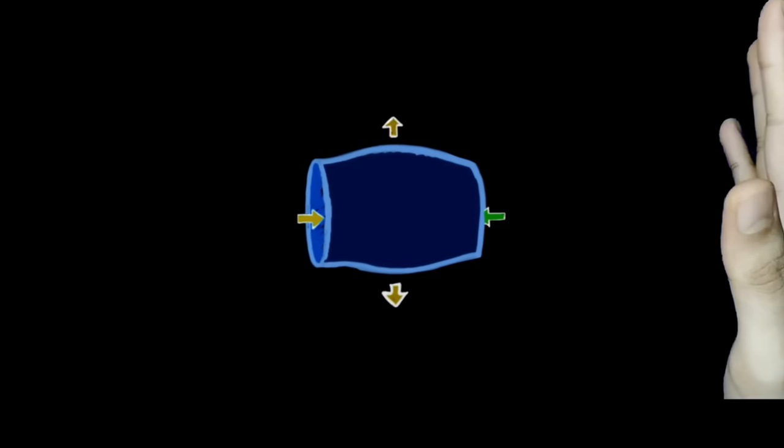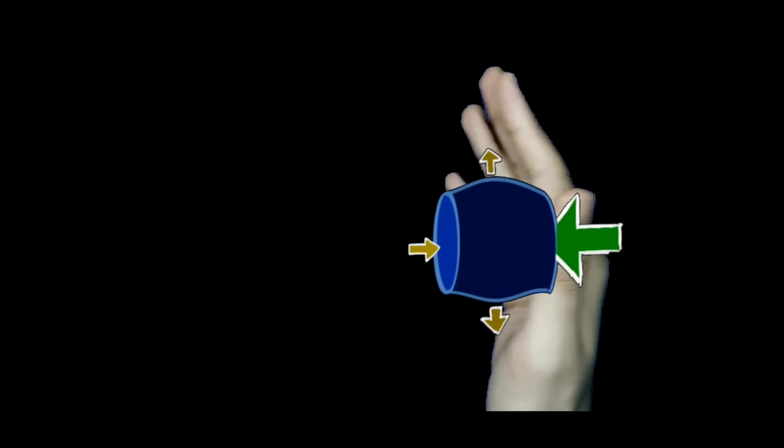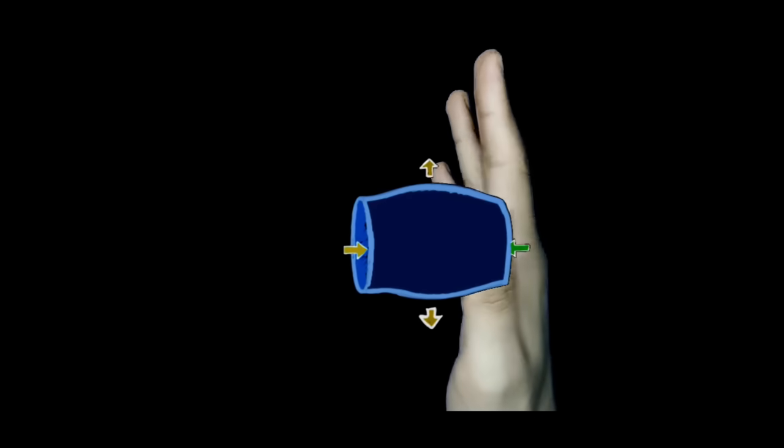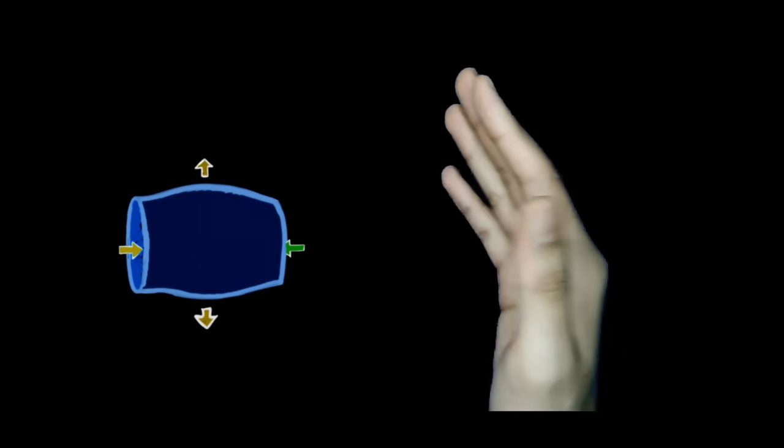And when it hits your hand, the water slows down again and stops dead, and now the pressure increases again, drastically hurting your hand. So water's speed reduced and pressure increased, consistent with our understanding.